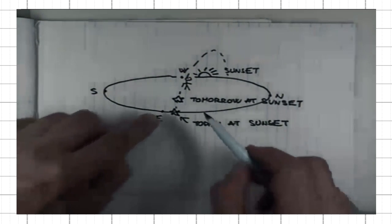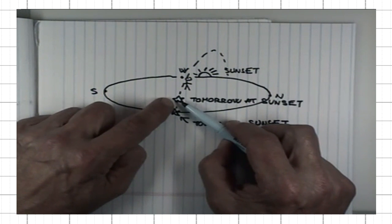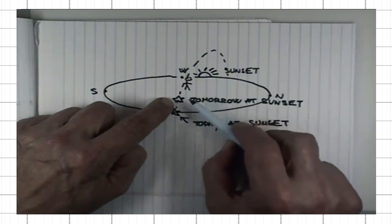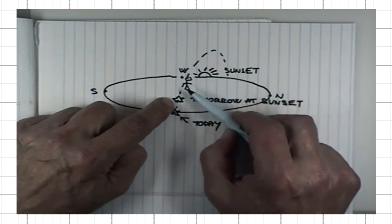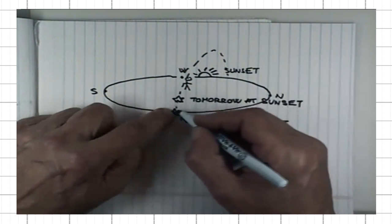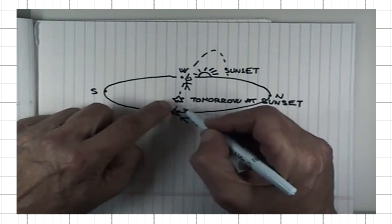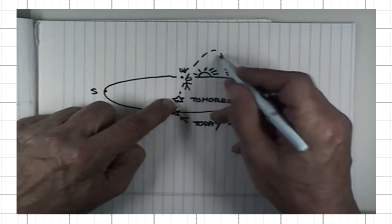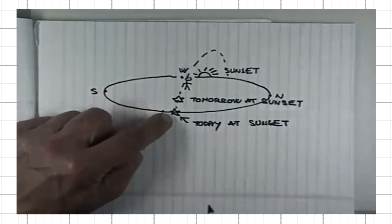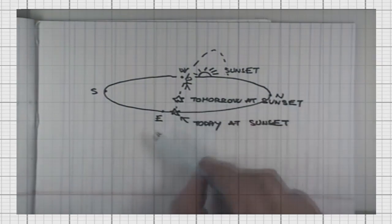Now, if I view the sun from the vantage point of a fixed star — say this one here — it would appear to me that the sun is getting closer and closer. If I measure the distance to the sun along this path of the star, then tomorrow the sun is going to be closer than it is today. That means that relative to the stars, the sun moves from west to east.